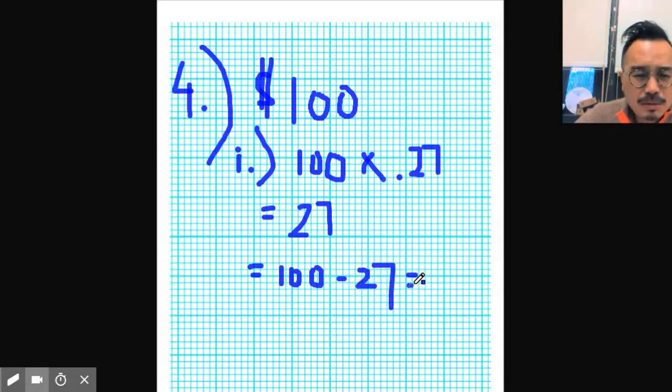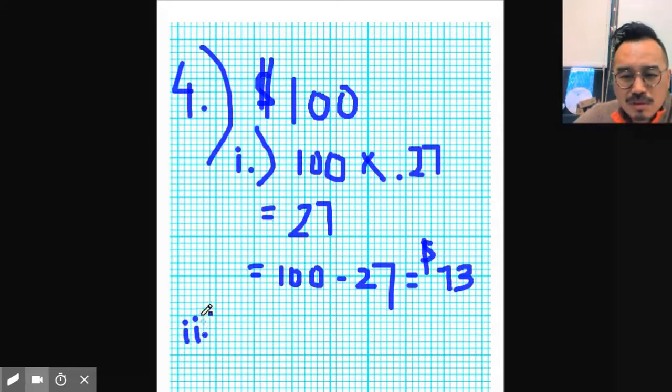I believe that is 73 dollars. Alright, second way, the super fast way. Computer's a little stuck. Now it's 100 times what you're paying. Wait, what are they asking for? Find the discount. Ooh okay, they want the discount, so this one's this answer. The discount is 27.